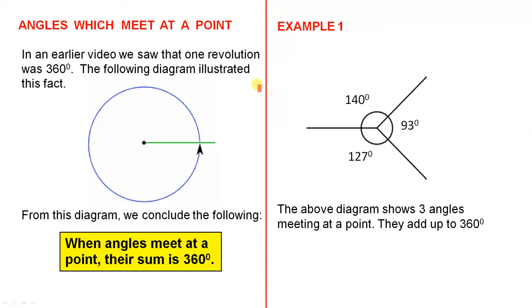Angles which meet at a point. In an earlier video, we saw that one revolution was 360 degrees. The following diagram illustrated this fact. From this diagram, we conclude the following: When angles meet at a point, their sum is 360 degrees.